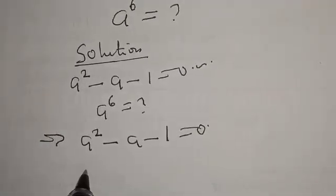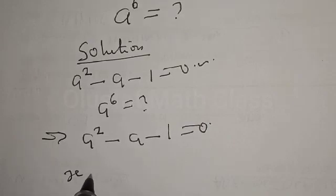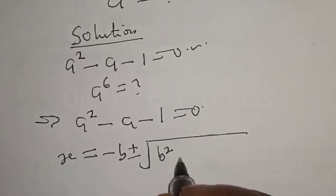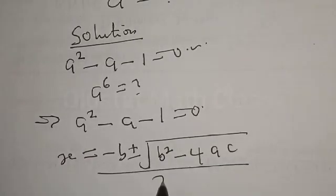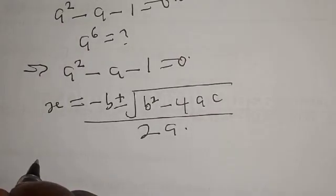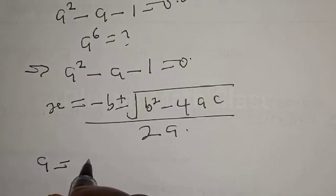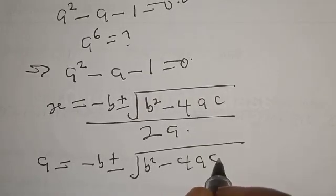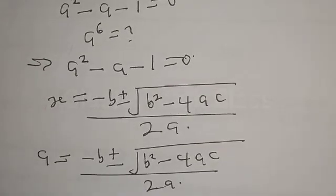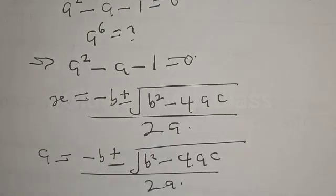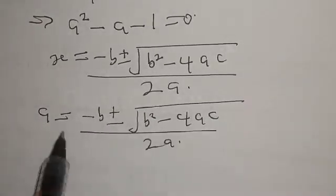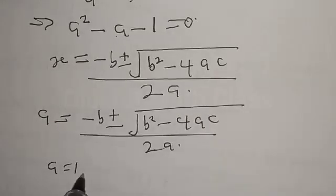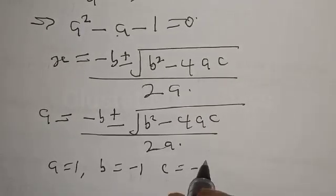Let's use the quadratic general formula. We know that s equals minus b plus or minus square root of b squared minus 4ac over 2a. From the given question, a is equal to 1, b is equal to minus 1, and c is equal to minus 1. Then let's substitute.